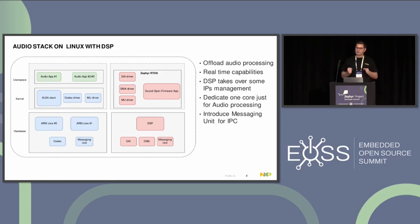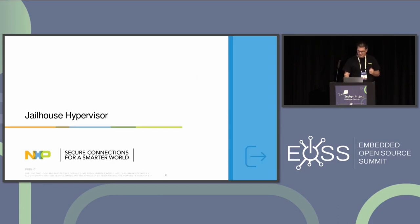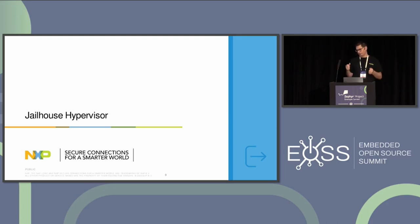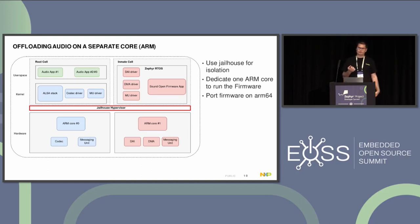Here we introduce the concept of a messaging unit, a hardware IP that allows two cores to communicate, very common on NXP platforms. When we don't have a DSP and lack that natural hardware separation, we introduce a hypervisor. The hypervisor we use is Jailhouse, and with its help we try to do the separation.